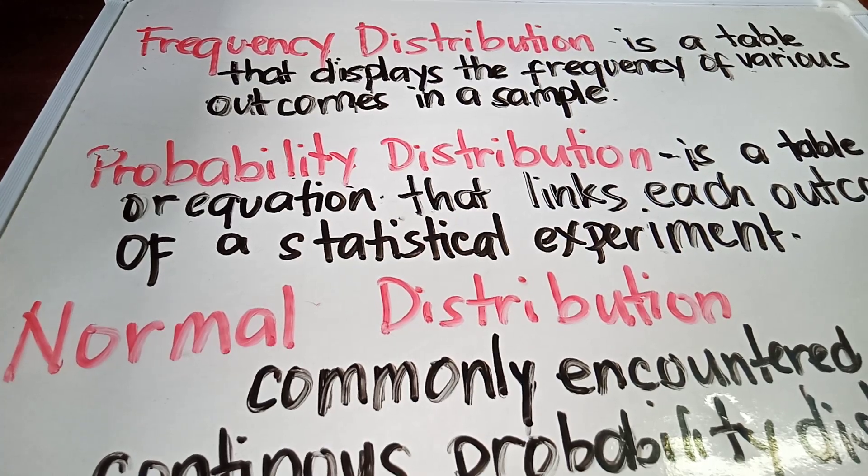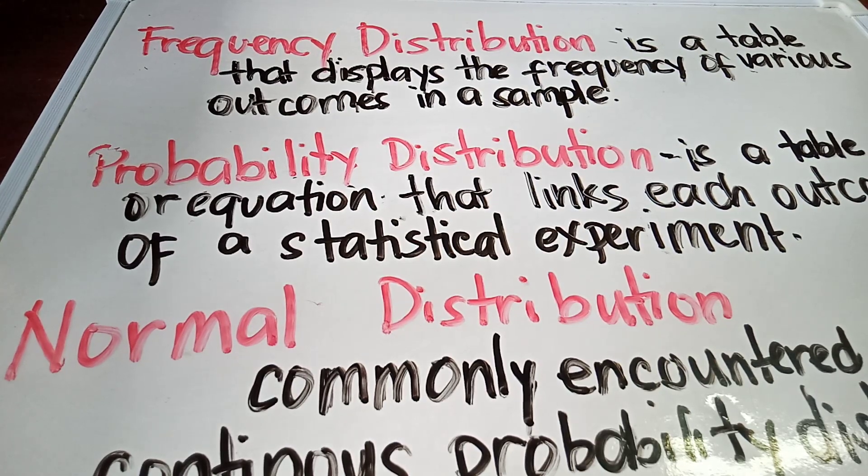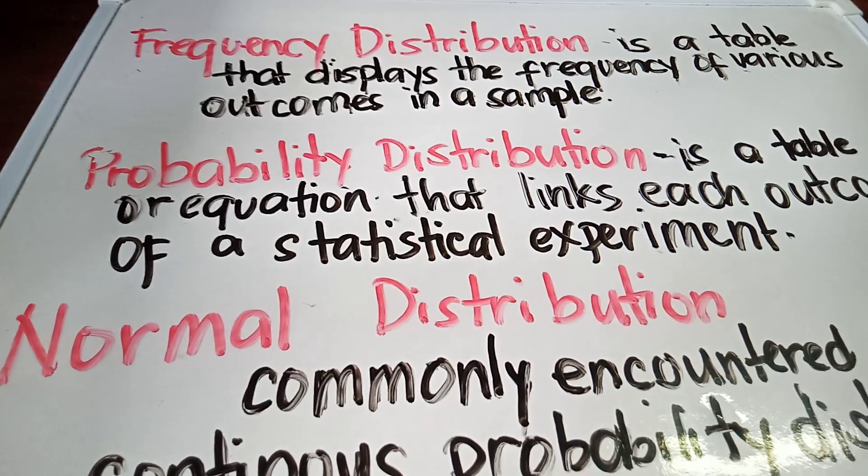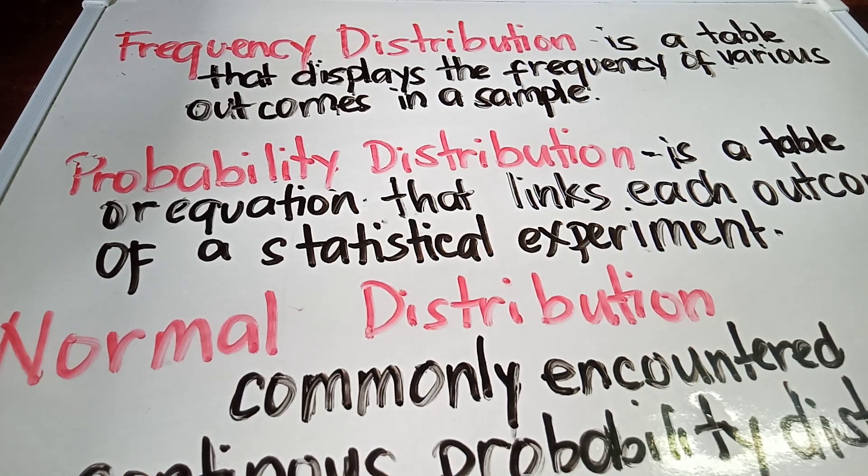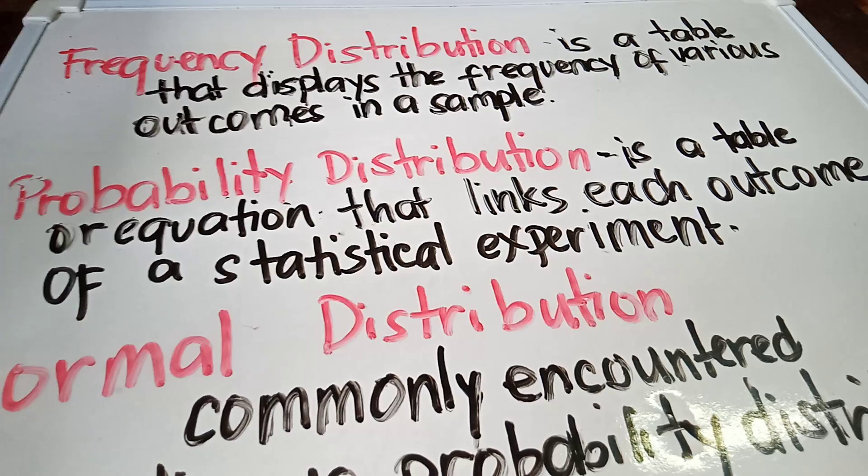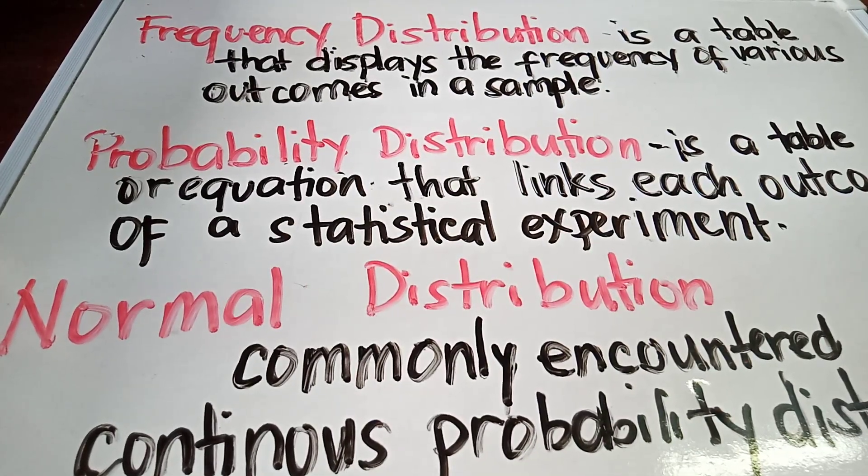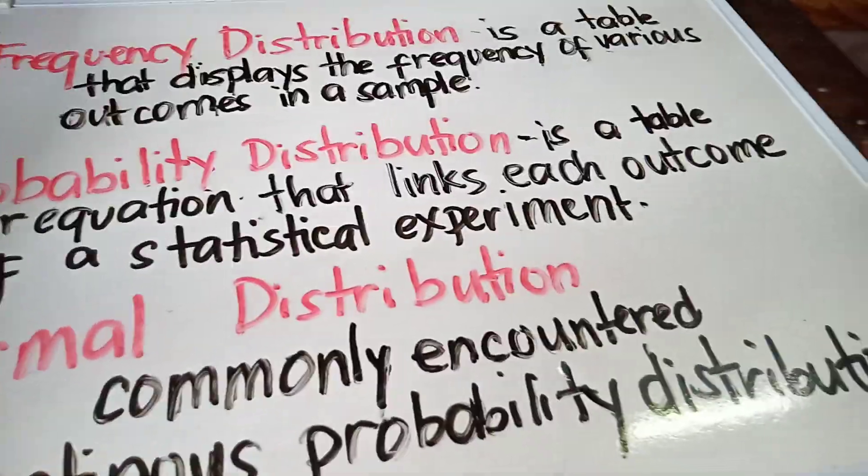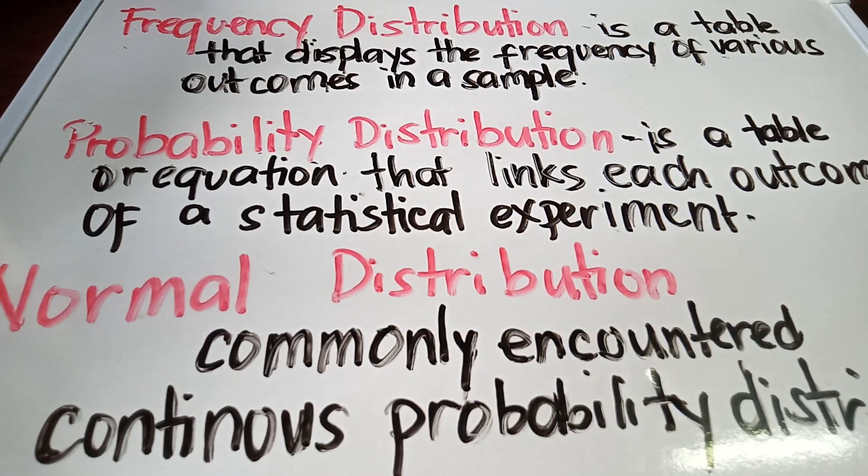What is frequency distribution? Frequency distribution is a table that displays the frequency of various outcomes in a sample, while probability distribution is a table or equation that links each outcome of a statistical experiment, while the normal distribution is a commonly encountered continuous probability distribution. In our next discussion, we will find out what would be the image and what is the difference between these three.